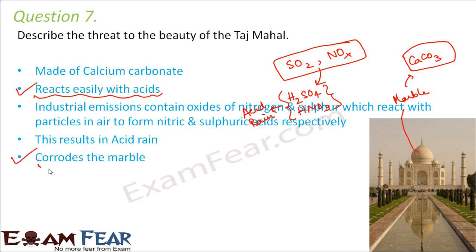As a result of this corrosion, the marble gradually turns blackish in color. That is why the Taj Mahal looks different today compared to how it used to look some 20 years back — earlier it used to be white and bright, but now it has become a little blackish and dull.